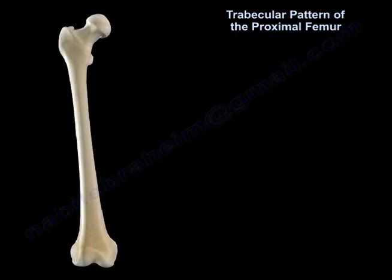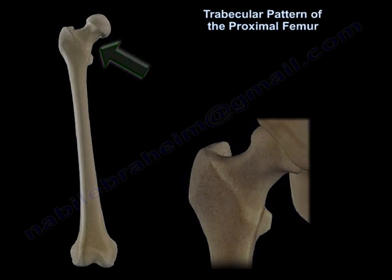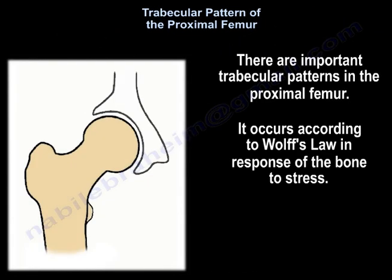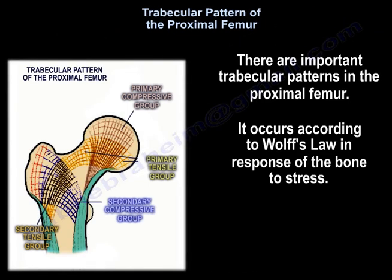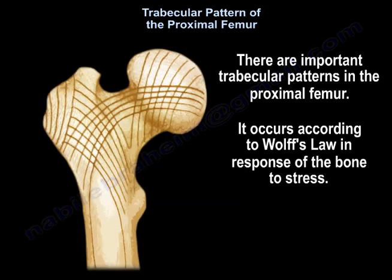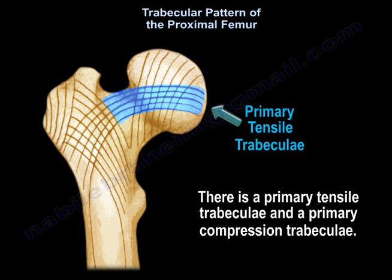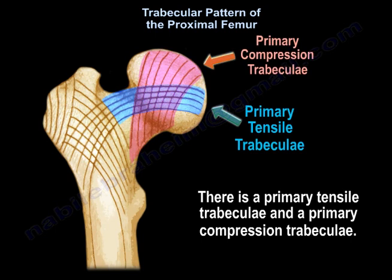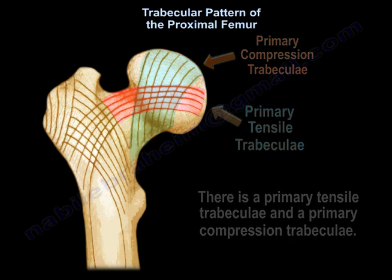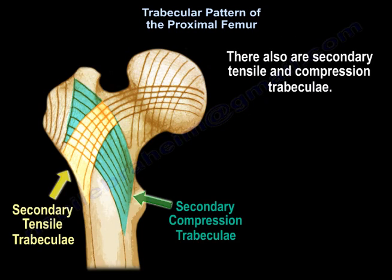Trabecular Pattern of the Proximal Femur. There are important trabecular patterns in the proximal femur, and it occurs according to Wolff's Law in response of the bone to stress. There is a primary tensile trabeculi, and there is a primary compression trabeculi. Also there are secondary tensile and compression trabeculi.